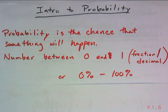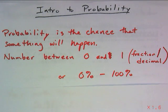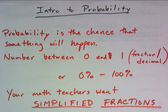That could be in fraction form or in decimal form. Sometimes you might see probability given in percent form, like when you hear the weather forecast talk about a 20% chance of rain today. But as far as your math teachers are concerned, unless otherwise specifically stated in the problem, we want you to give us your probability as simplified fractions.